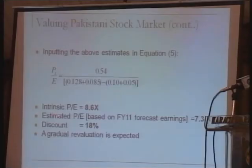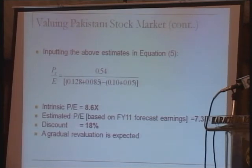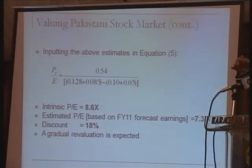The estimated price-to-earnings ratio based on fiscal year 2011 earnings is 7.3 times. So it looks as if the stock market is about 18% undervalued, and we expect that over time this should result in the stock market going up. We saw obviously a huge crash; the market has started going up but has not gone back to previous levels. So based on even today's indicators, which are not very positive — with the PIB rate at about 13% — the stock market still seems a little bit undervalued.